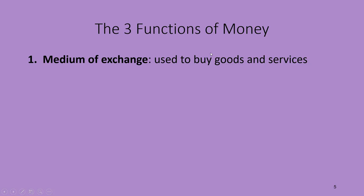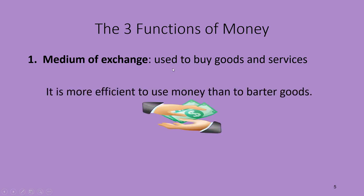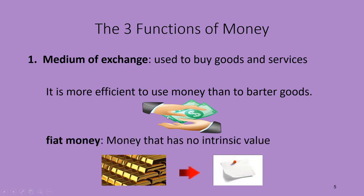The first function is that money is used as a medium of exchange — it's used to buy goods and services. If you didn't have money, you could only trade the goods you produced for the goods other people produced, which is hard to make happen. It's more efficient to use money than to barter goods for other goods because money is pretty accepted by everyone. By the way, we are operating with what is known as fiat money — money that has no intrinsic value. Here in the United States, our money is no longer backed by the gold standard, not since 1971 and the collapse of the Bretton Woods system.